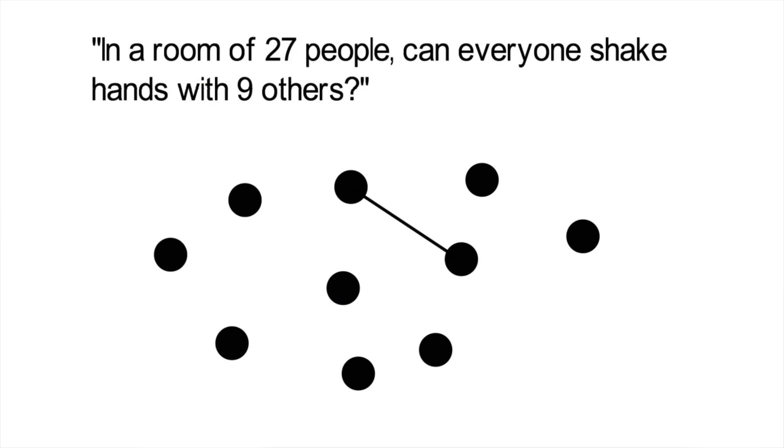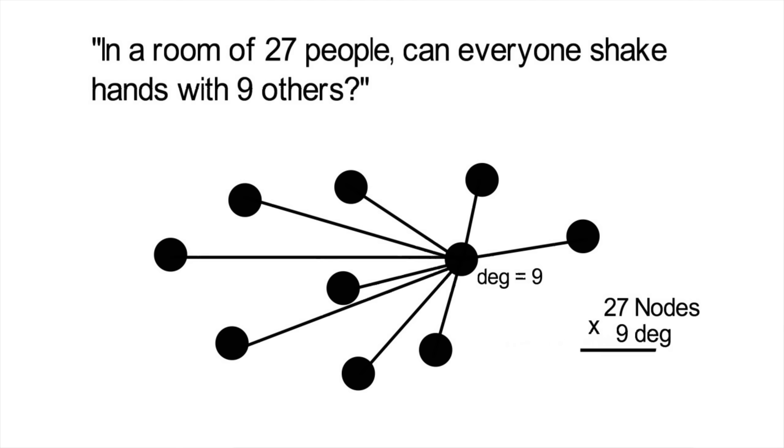Now we can go back to our problem. If everyone must shake hands with 9 others, then every node or dot needs 9 lines coming from it, meaning they gave 9 handshakes. Therefore, every node would have a degree of 9. If 27 nodes all have a degree of 9, then the sum of those degrees is 243. And we said the sum of the degrees is always twice the amount of edges. That means there are 121.5 edges, which is not possible.